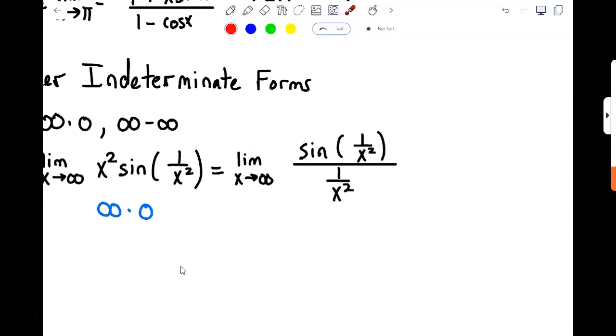Notice now that this limit, top is zero, the bottom is zero. We've transformed it into a zero over zero limit. If we had done it the other way, putting the x squared on top, and then one over sine of one over x squared on the bottom, then that would have been an infinity over infinity limit, and we could still apply L'Hôpital's rule as well. So it'd still work.